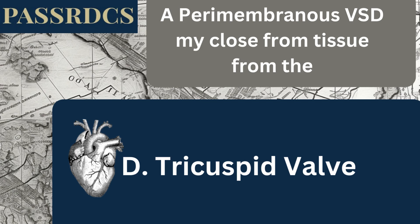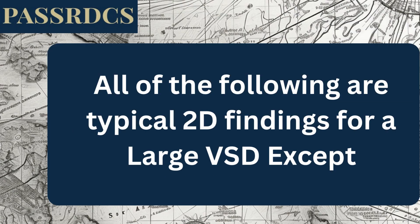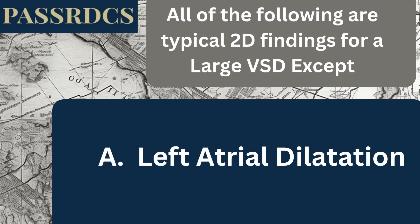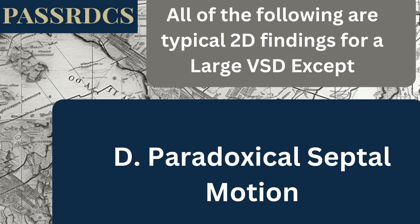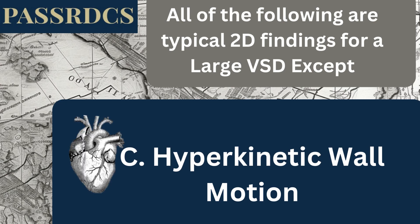All of the following are typical M-mode and 2D findings for a large VSD, except: left atrial dilatation, left ventricular dilation, hyperkinetic wall motion, or paradoxical septal motion. Most people said hyperkinetic wall motion, which is the correct incorrect answer. You can see left atrial and left ventricular dilation from a VSD, and paradoxical septal motion is occasionally present in a large VSD because of the equalization of pressure across the defect.